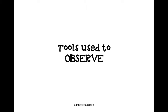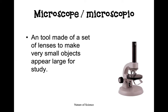Next, we're going to talk about tools that you use to observe. When we observe, we are watching or looking at something. A tool you might use to observe is a microscope. Microscopes are made of sets of lenses that make very small objects appear large for study. This is very important because our human eyes cannot see everything — for example, we wouldn't know germs and viruses exist without powerful microscopes.